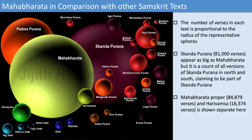This is another slide I normally use in all my talks on Mahabharata, giving another perspective of how the size of Mahabharata compares with other texts. You can see the Ramayana in green, then Mahabharata, the other Puranas, and the four Vedas. This gives an understanding of the sheer size of Mahabharata.